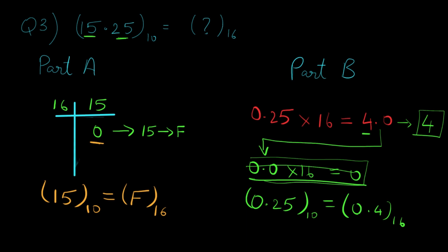That's it for this video guys. Now that we have learned the answer for part A and part B, we just need to club these answers to get our final answer: 15.25 in decimal is equal to F.4 in hexadecimal.